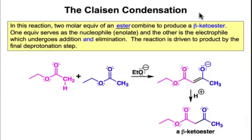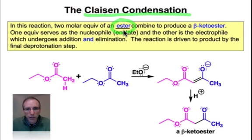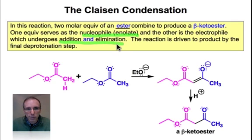One important way to make the β-ketoester is by the reaction known as the Claisen condensation. The Claisen condensation is analogous to the aldol condensation, except it involves two molar equivalents of an ester functional group rather than a ketone or an aldehyde. Under basic conditions, the ester enolate is formed and serves as the nucleophile. That adds into the electrophilic carbonyl group of the other ester equivalent, and by the process of addition-elimination, substitution takes place. A final deprotonation helps to drive this reaction forward toward the side of the 1,3-dicarbonyl compound.